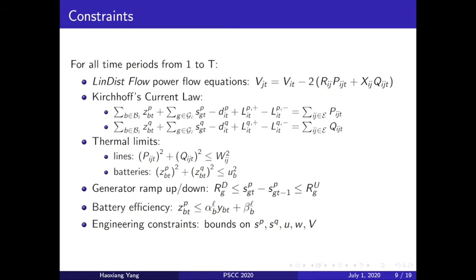We're going to build our constraints in the optimal power flow setting. For all time periods from 1 to T we include the linearized power flow equations, the Kirchhoff's current law, the thermal limits for both the lines and batteries, and the ramping constraints for the generators. We also need to construct the battery efficiency curves using the relaxed format and all the engineering constraints including the bounds on the generation, the battery capacity setup, the battery inventories, and the voltages.